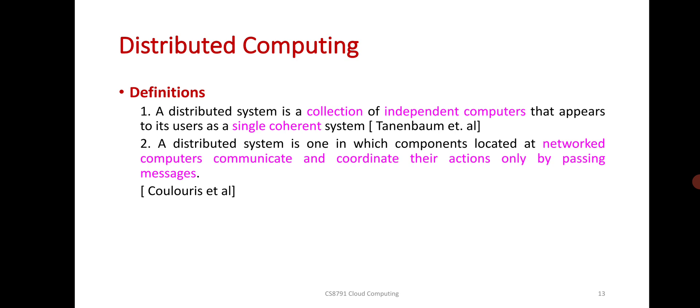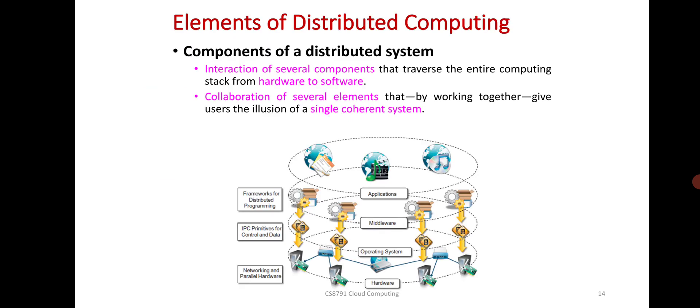Distributed computing: a distributed system is a collection of independent computers that appears to its users as a single coherent system. It is one in which components located at networked computers communicate and coordinate their actions only by passing messages.